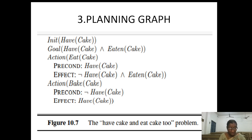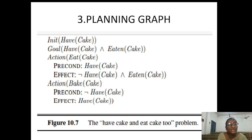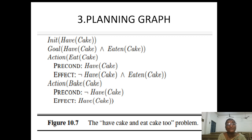Here we see a planning graph for the have-cake and eat-cake problem described in PDDL. Initially, I have a cake. If I have a cake, I can eat the cake; otherwise I cannot. For the eat action, the precondition is I should have a cake — written as 'have(cake)'. After eating, the cake will not be there, so the effect is negated: 'not have(cake)' and 'eaten(cake)'. For the bake action, the precondition is that I don't have a cake — 'not have(cake)' — and the effect is 'have(cake)', meaning after baking, a cake is prepared.